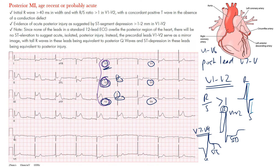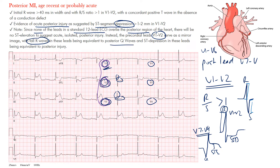You may also see a concordant T wave in the absence of a conduction defect. Acute posterior injury is suggested by ST depression of at least one to two millimeters in those right precordial leads. Because the standard 12-lead does not have leads overlying the posterior region, there's no ST elevation to suggest it. Instead, V1 and V2 serve as the mirror image, where tall R waves are equivalent to posterior Q waves and ST depression is equivalent to the ST elevation of a posterior injury pattern.